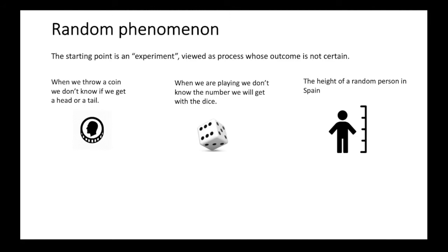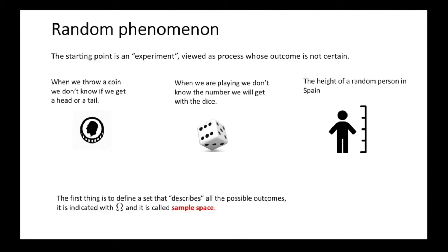After we are sure we are observing a random phenomenon, we need a way to describe it mathematically. The first thing to do is to describe all the possible outcomes of our process. We can represent them in an intuitive way using letters or numbers. The set containing all the outcomes is called sample space, and we will indicate it with the letter omega. In the example of the coin, we could use the letter T for tails and H for heads. For the dice, we can use the integers between 1 and 6, and for the heights, the real numbers.